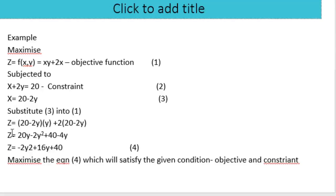Substituting x = 20 − 2y into z = xy + 2x gives: z = (20 − 2y)y + 2(20 − 2y), which expands to z = 20y − 2y² + 40 − 4y. Simplifying, z = −2y² + 16y + 40.